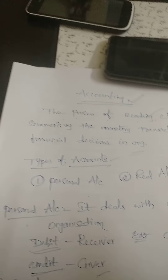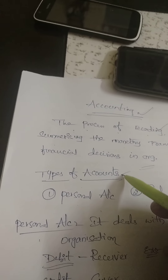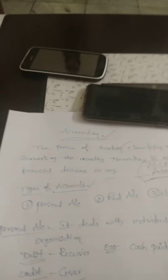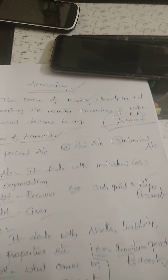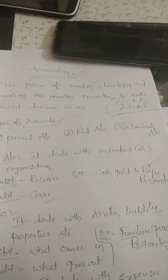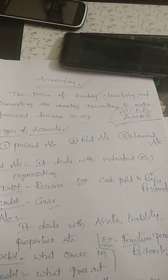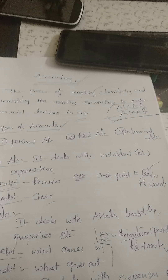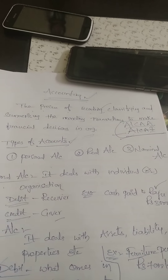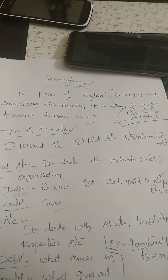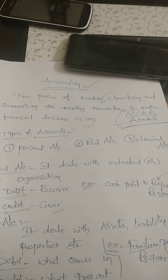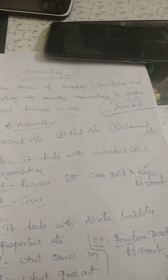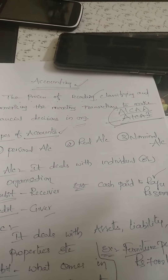Coming to the types of accounting, we have three types normally used in organizations. Whatever transactions are done by the companies, they are divided into three types: personal account, real account, and nominal account. Coming to the personal account, it deals with individual or organizational activities. For example, cash paid to Raju the amount is 3,000 — here Raju is the individual, so this transaction comes under the personal account.